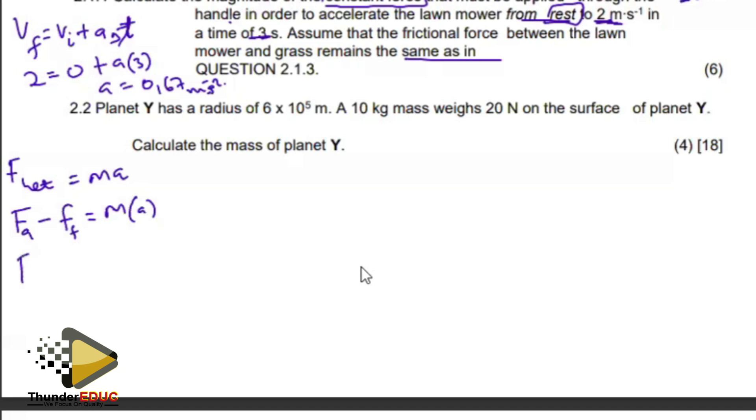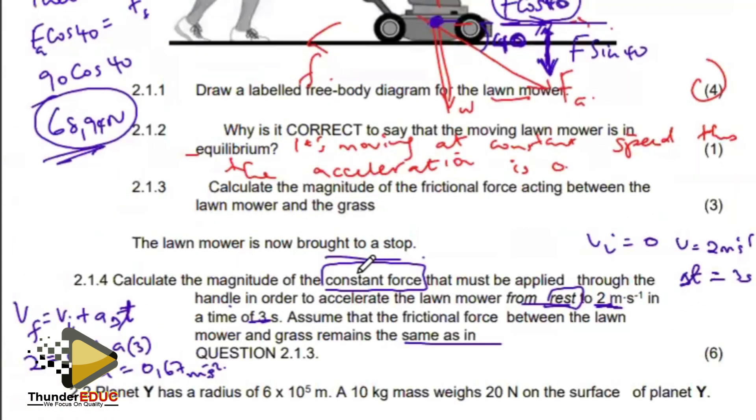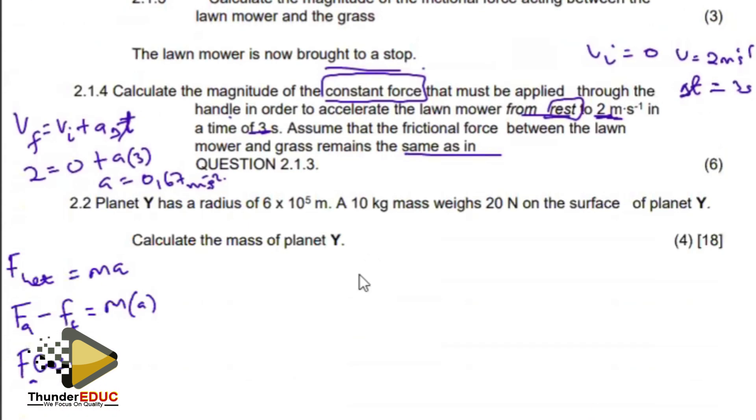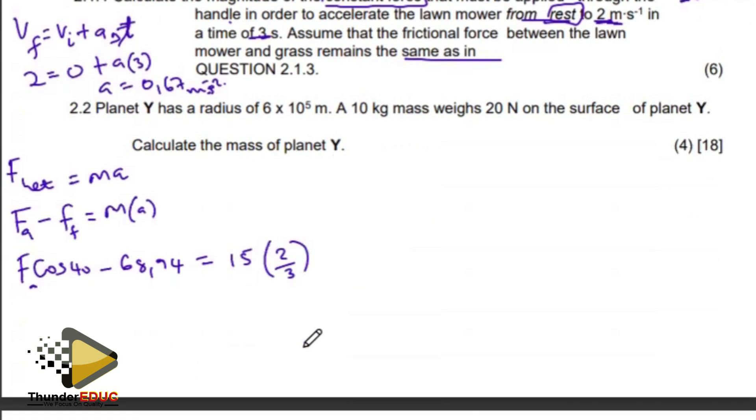This is going to be F applied cosine 40 minus 68.94 should equal 15 multiplied by two over three. So F cosine 40 equals 10, because 15 times two by three is 10. When I add that, I'm going to have 78.94.